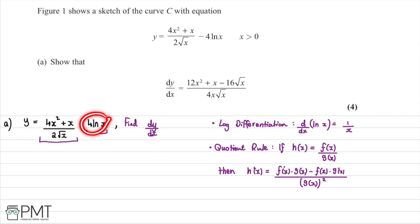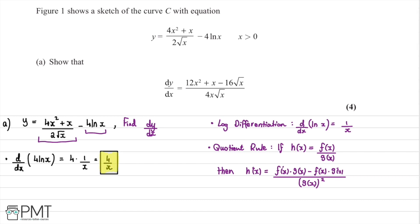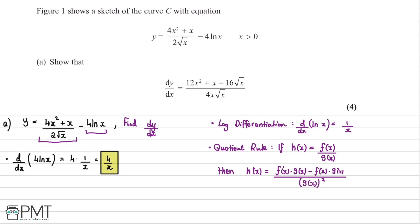First, we take a look at the log differentiation. We know that if we differentiate ln(x), its derivative is 1/x. So the derivative of 4ln(x) with respect to x is going to be 4 multiplied by 1/x, which gives us 4/x. We'll draw a box around this as it's a very important piece of information to come back to later.